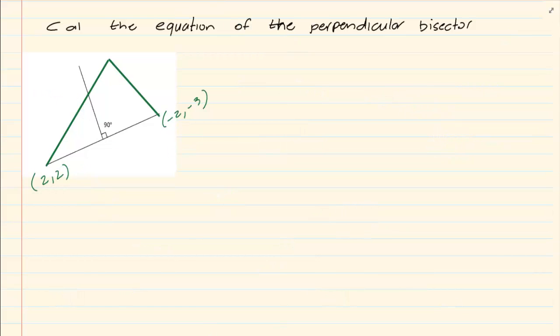Now you need to understand the vocabulary. Perpendicular means that it is cutting at 90 degrees and bisector means it is cutting in half.